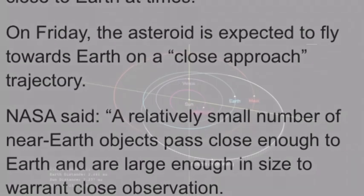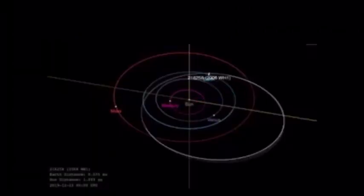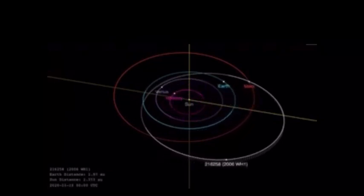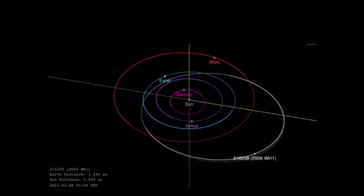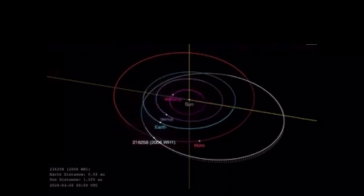NASA's asteroid trackers have dubbed the space rock 2006 WH1 and expect a close brush with the giant on Friday, December 20th, around 3:17 p.m. GMT, which is 10:17 a.m. Eastern time.